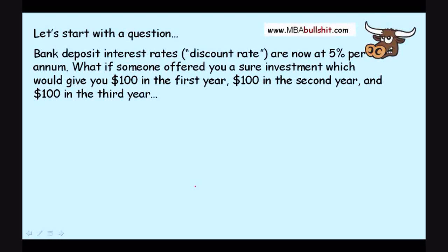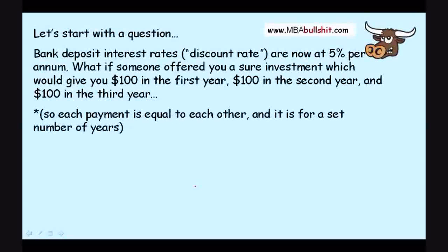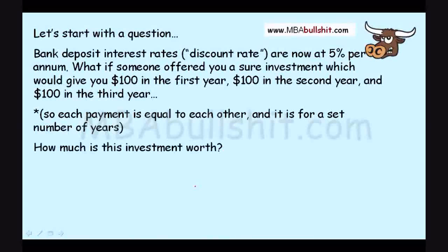Per annum means per year. And what if someone offered you a sure investment which would give you $100 in the first year, $100 in the second year, and $100 in the third year. So each payment is equal to each other and it is for a set number of years. Exactly three years. Now, how much is this investment worth?